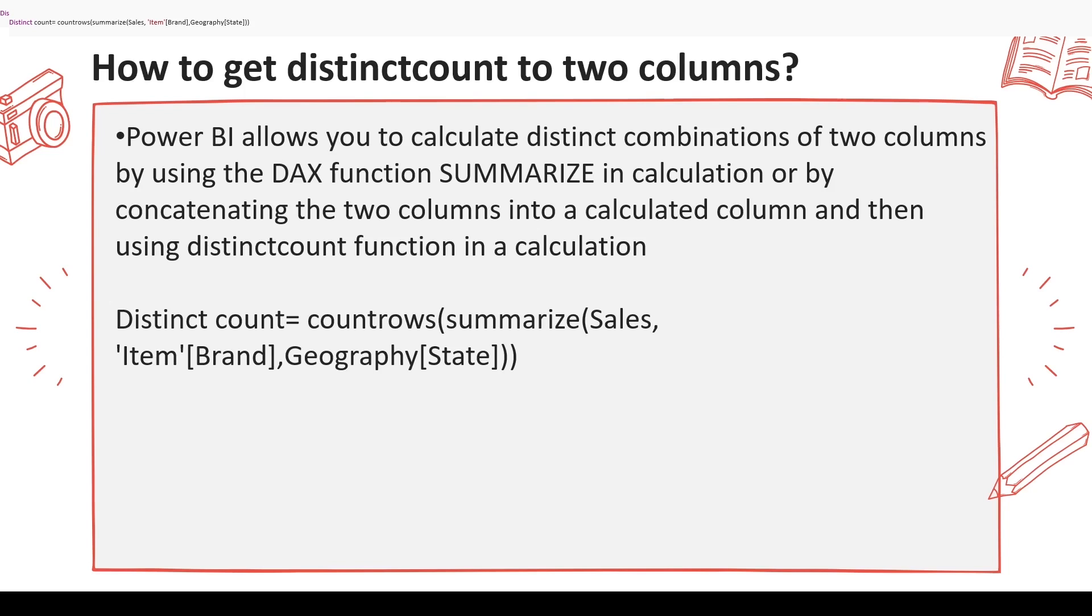And in the group by sections, I am taking Item Brand and Geography State. I'm using SUMMARIZE which is going to give me distinct values of Item Brand and Geography State, and then I'm counting that to get the overall distinct count. Here I'm using COUNT ROWS and SUMMARIZE to get my distinct count.